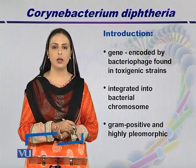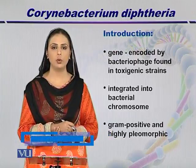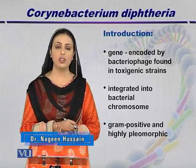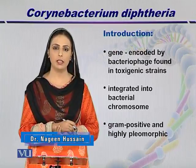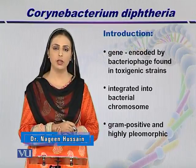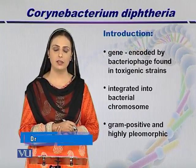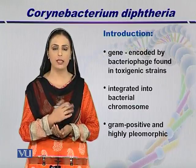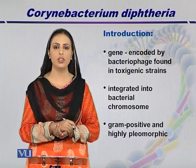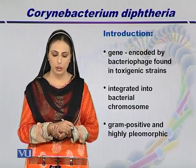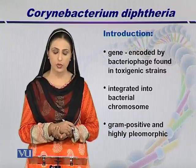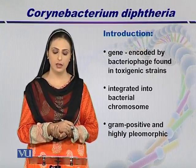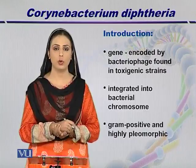If we talk about the genomics of Corynebacterium diphtheria, the toxin gene is encoded by a bacteriophage. Bacteriophages are viruses that attack bacteria, and this gene is found in the toxigenic strains. They have the ability to integrate into the bacterial chromosome.